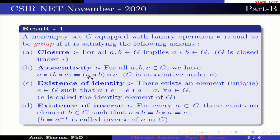Next is existence of identity: there exists a unique element E belonging to G such that A star E equals E star A equals A, for all A belonging to G. This E is called the identity element of G. Next is existence of inverse: for every A belonging to G, there exists an element B belonging to G such that A star B equals B star A equals the identity. B is called the inverse of A in G.